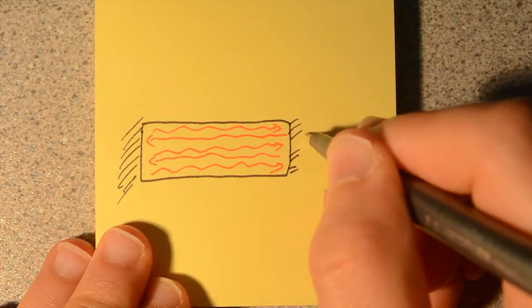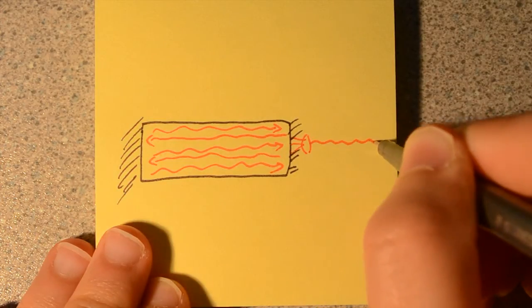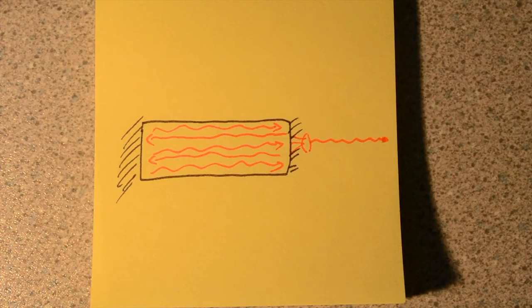On each pass, a small amount of the light makes it through the partially reflecting mirror, and through the lenses, producing the laser beam that we know.